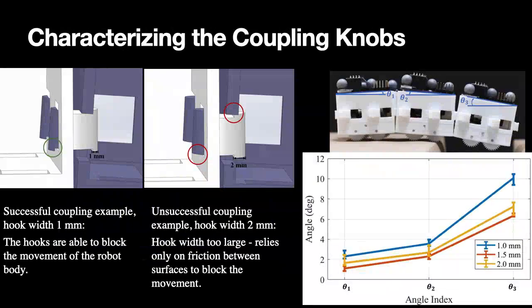Here we are characterizing the coupling knobs. One of the crucial parameters in designing the knobs and hooks is the width of the hook shown in this picture. For example, on the left-hand side, we are showing a width of one millimeter hook. We see that when the robot tilts with gravity, the hook is able to block the movement of the robot body.